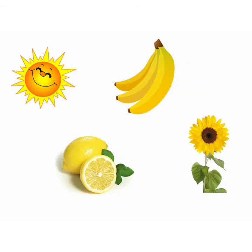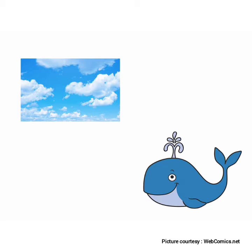The sun is yellow. A banana is yellow. A lemon is yellow. A sunflower is yellow. The sky is blue. A whale is blue.